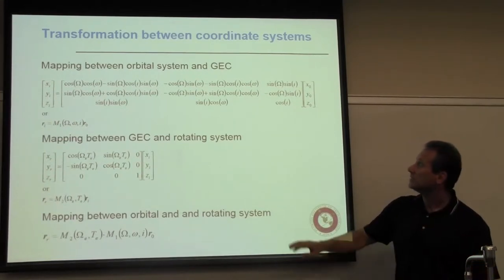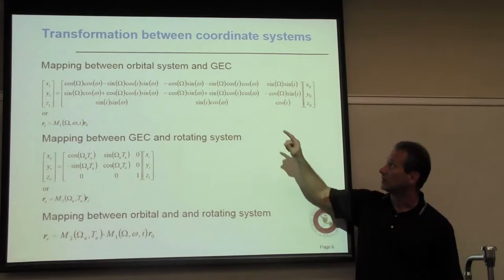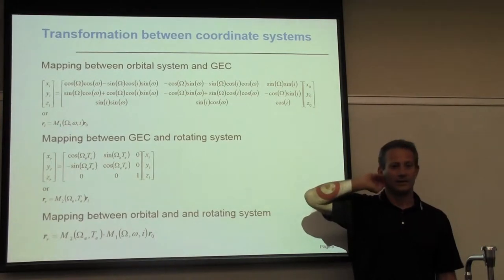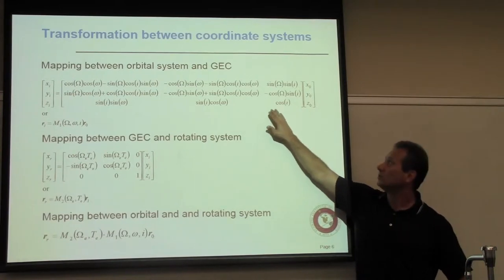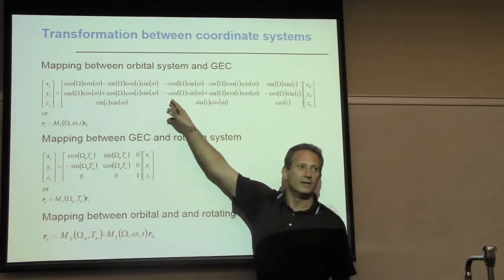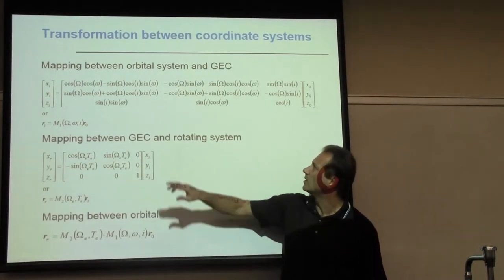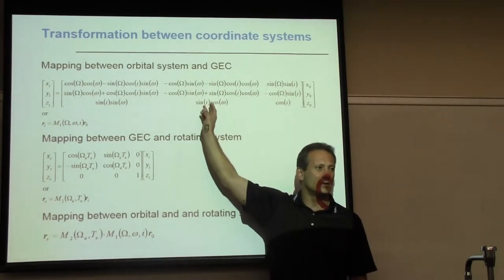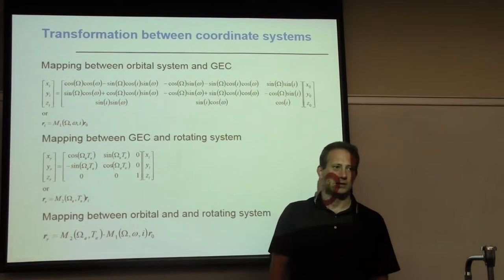Important note: this mapping matrix M1 is incorrect in your textbook. After going to the original reference I found that one of the cosines should be a sine, and there are some other sign and sine/cosine flips. Make sure you double-check and correct it before using it in calculations.